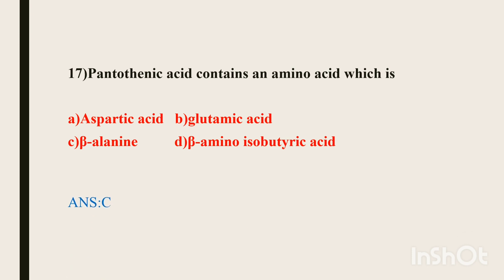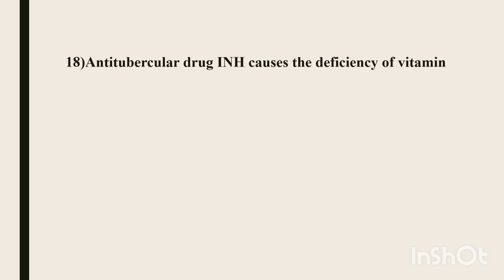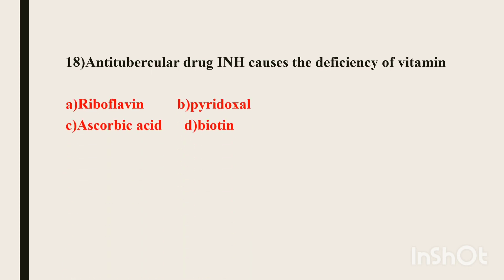Eighteenth question. Anti-tubercular drug isoniazid causes the deficiency of which vitamin? Options: riboflavin, pyridoxal, ascorbic acid, biotin. The correct answer is pyridoxal (vitamin B6), because isoniazid interferes with pyridoxal metabolites, so vitamin B6 supplements are recommended.